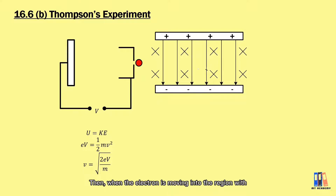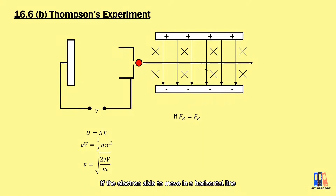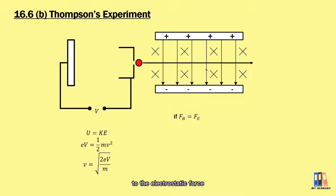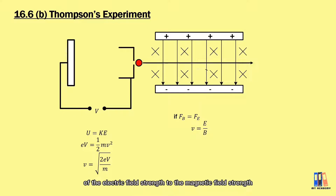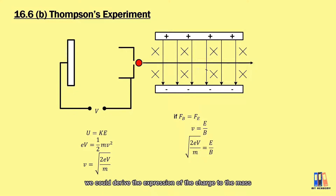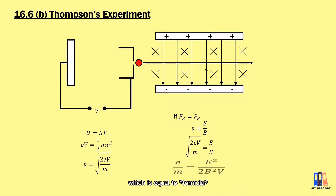When the electron moves into the region with both electric and magnetic fields, if the electron is able to move in a horizontal line, it means the magnetic force equals the electrostatic force, and the velocity of the electrons equals the ratio of the electric field strength to the magnetic field strength. Substituting the formula for velocity, we can derive the expression for the charge-to-mass ratio, which equals E squared divided by 2B squared V.